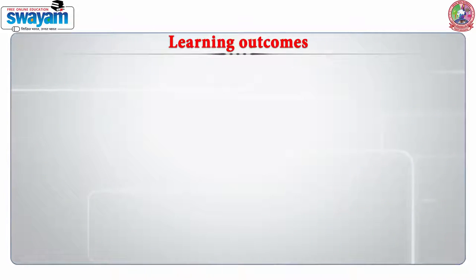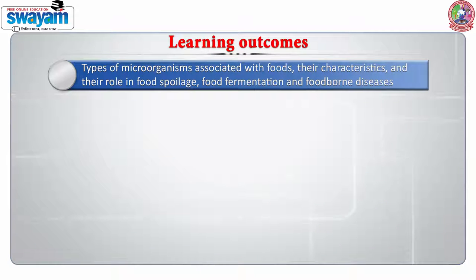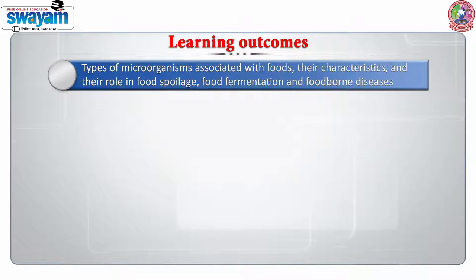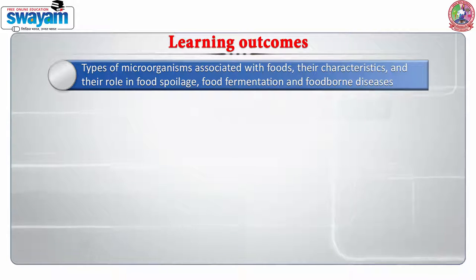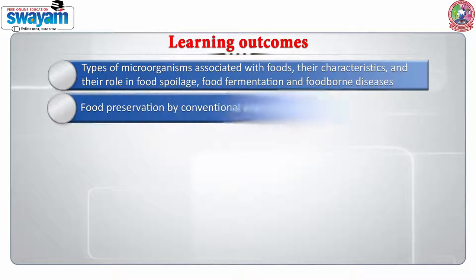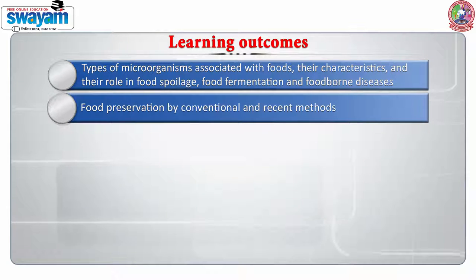The learning outcome of this course is that after the completion of this course, the student will be able to understand the basic aspects of different types of microorganisms associated with food and their characteristics and their role in food spoilage, food fermentation, and foodborne disease.